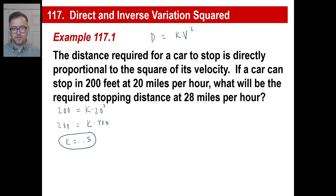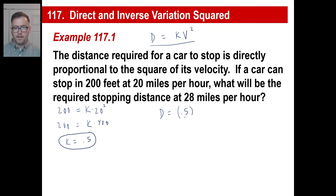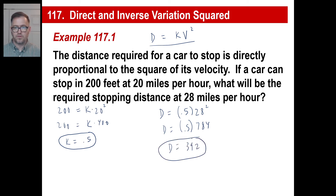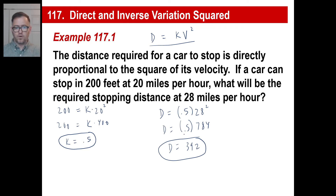The question is: what will be the required stopping distance at 28 miles per hour? We'll do exactly the same thing. We don't know D, we put a D. The K we figured out was 0.5. And 28 miles per hour, we go 28 squared. If you know that 28 times 28 is 784, all you need to do is multiply by 0.5 — or just divide by two — and you get D equals 392. So if you're going 20 miles an hour it takes 200 feet to stop, and at 28 miles an hour it's going to take 392 feet.